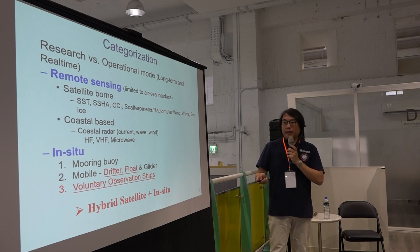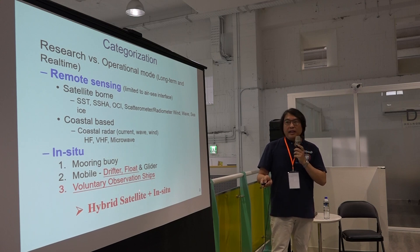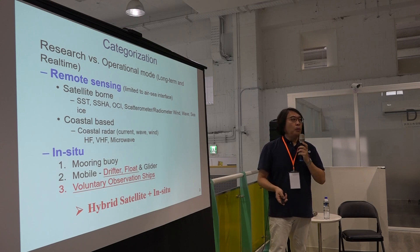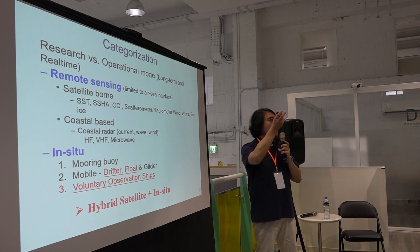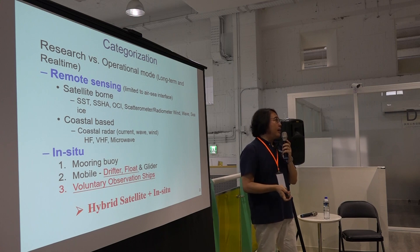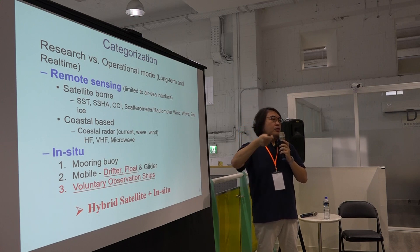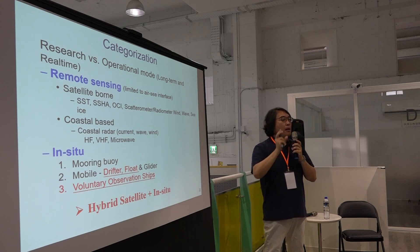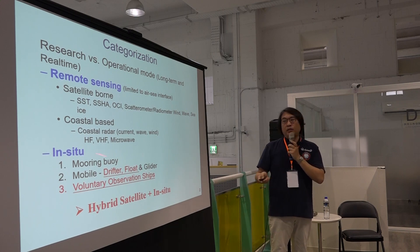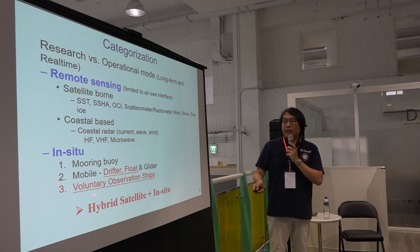The third type is from vessels — ships. These ships voluntarily observe all the data measured by onboard instrumentation. Every ship is equipped with a wind anemometer, wind sensor, temperature, and barometric sensors — all the basic meteorology instruments. They provide this data voluntarily. These are the ongoing current observation infrastructures.